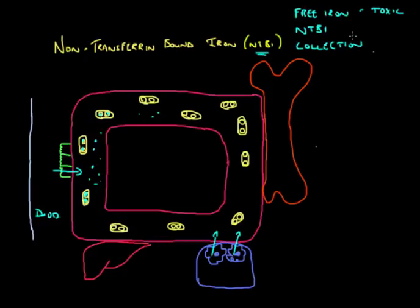Some of these iron molecules are bound very tightly. Some are bound very loosely to the other molecules. And those that are bound loosely are called labile plasma iron. So labile plasma iron is a subset, or it's a type of non-transferrin bound iron, but it's very important to know about because labile plasma iron is the most toxic of all the forms of NTBI.